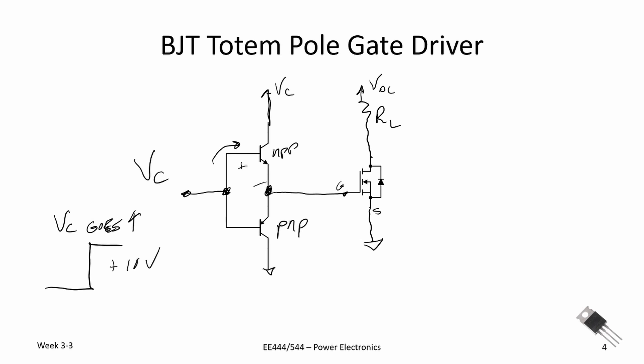Usually 9.3 volts is enough to turn the MOSFET on. As the top transistor turns on, it will push current into the gate. Recall from the previous video: MOSFETs are voltage-driven, but it's really how quickly we can get charge in and out of the MOSFET that turns it on and off. Time rate of change of charge is current — so it's about driving current quickly.